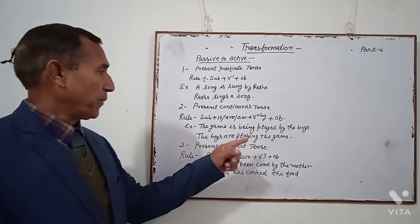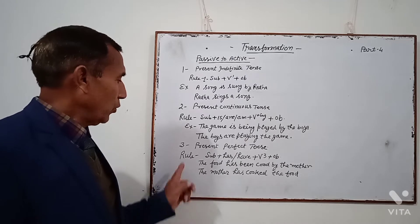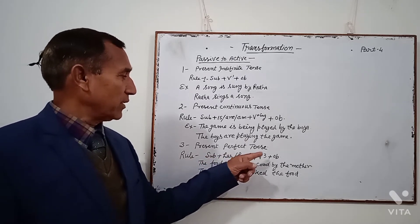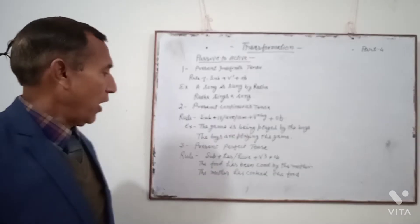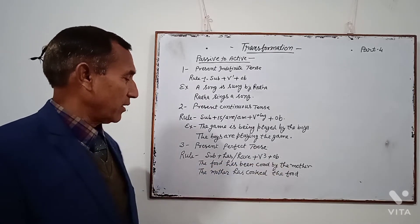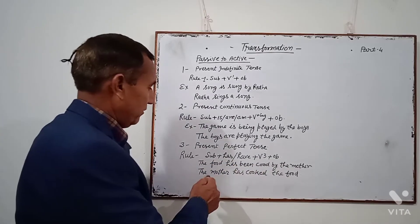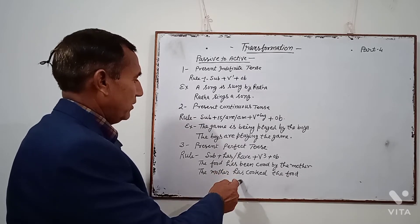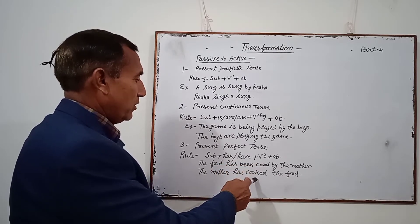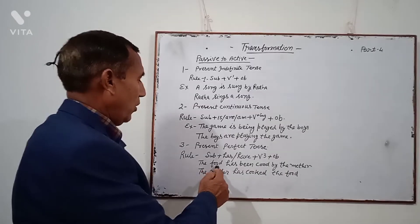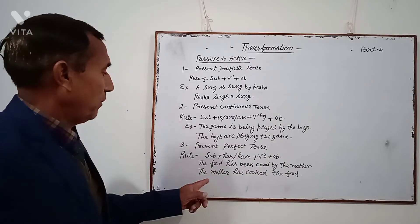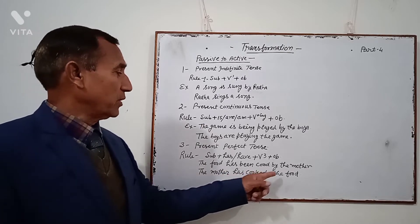Now, Present Perfect Tense. Rule: Subject + has/have + V3 + Object. Example: 'The food has been cooked by the mother.' Subject is 'the mother'. Has, then V3 'cooked', then object 'the food'. So the Active sentence is: 'The mother has cooked the food.'